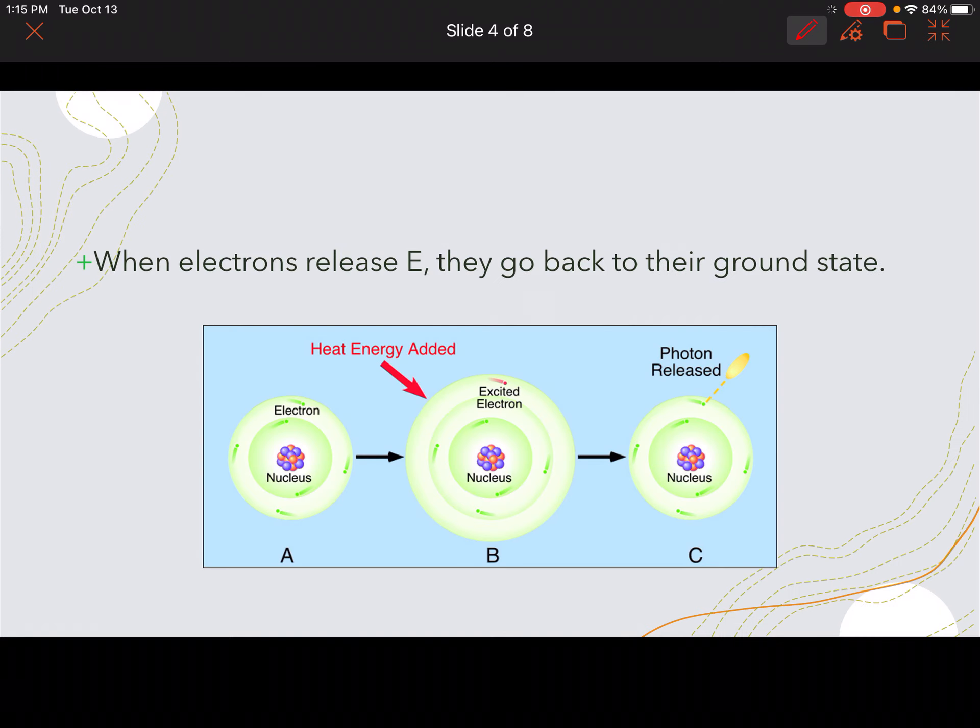Now, when it does go back to its ground state, it's going to release energy. And it does that in certain wavelengths, certain energies. So there's certain photons that are going to be released. And as we can see here, we've got picture A here. So this is just our normal atom. And then it becomes excited. So it's going to expand to those excited orbitals, shells. And then when it releases it, it goes back to normal. So it goes back to its ground state there.